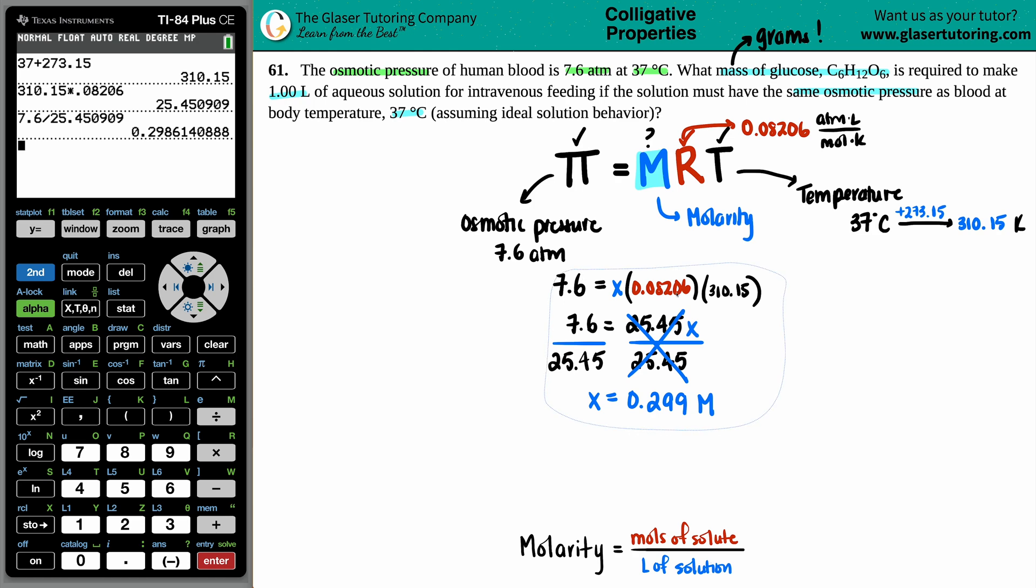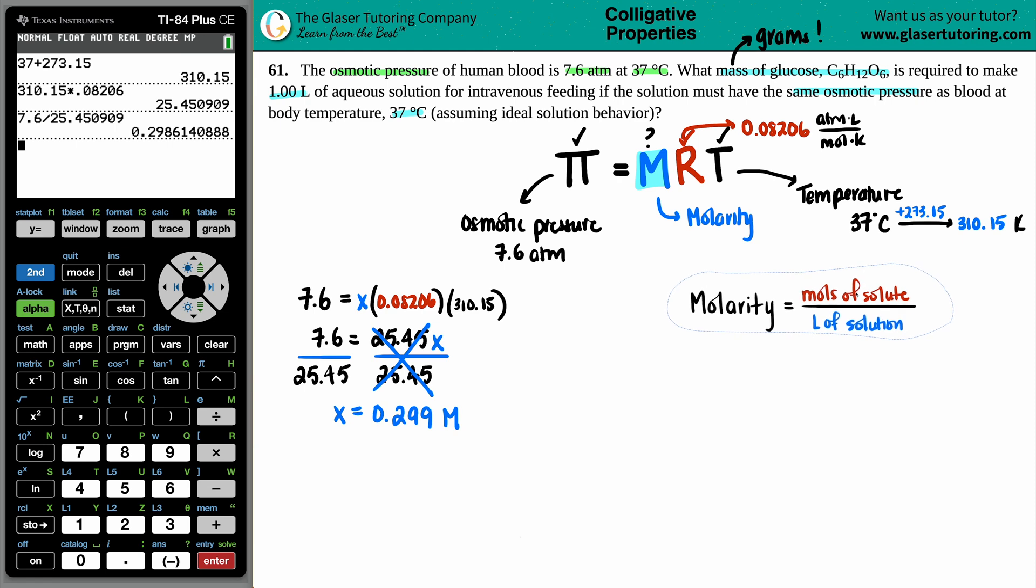So maybe I'll put this over here. Now the molarity that we just found was 0.299 molarity. So what is going to be my variable, the moles or the liters? Well, they did tell me that we were making a one liter solution. Thank goodness for that. They told us we had 1.00 liters. Nowhere in the problem did they say we had any moles.